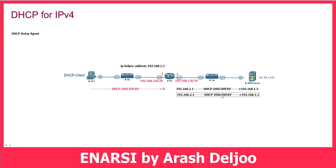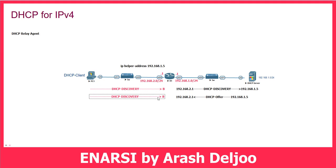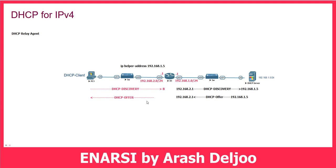The router creates a unicast DHCP Discovery to the destination of the DHCP server. After that, the DHCP server answers from its IP address to the router's IP — 192.168.21 — with a unicast DHCP Offer message. Then the router creates a broadcast DHCP Offer with the same information it received.